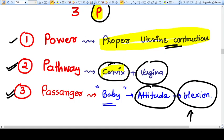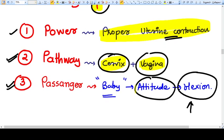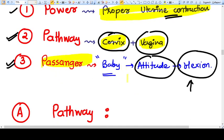The passenger, that means the baby, the attitude of the baby whether it is flexed or extended. The attitude decides the overall volume of the baby to be passed out from the pathway.